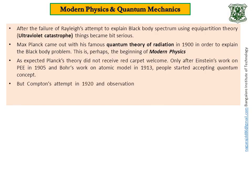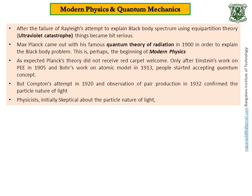But Compton's attempt in 1920 and observation of pair production in 1932 finally confirmed the particle nature of light. I suggest my students once again to go through any modern physics books to know more about Compton effect and also about what is known as pair production. Physicists initially skeptical about the particle nature of light started accepting it.